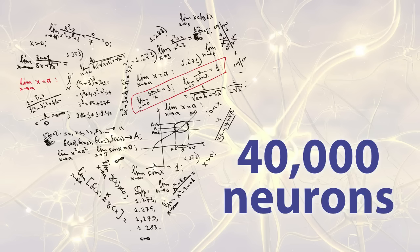There are over 40,000 neurons found in the heart, the same number as the brain itself.